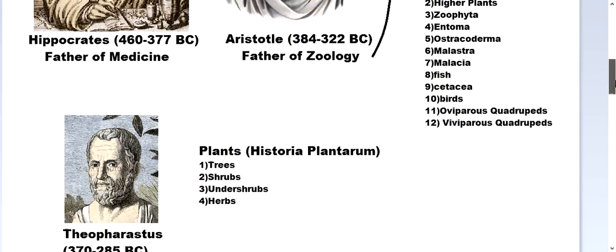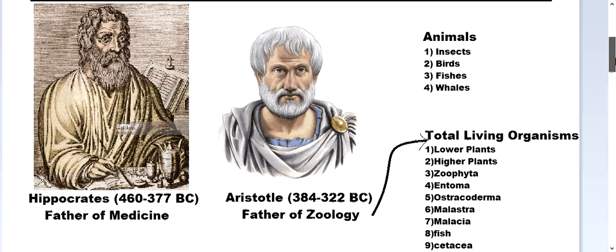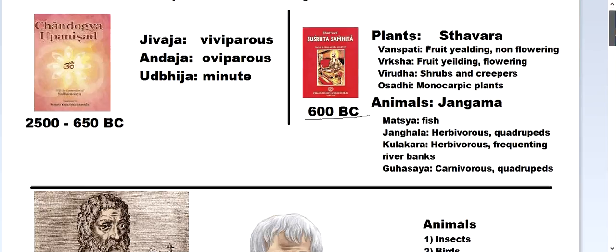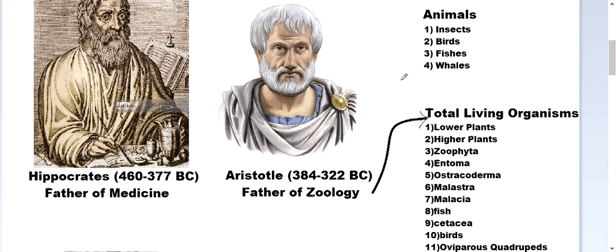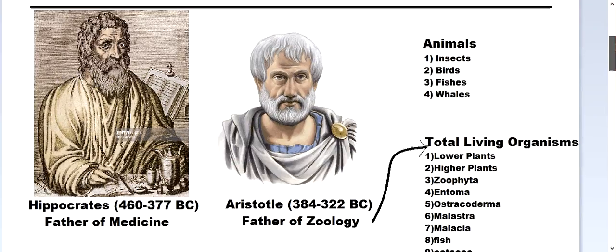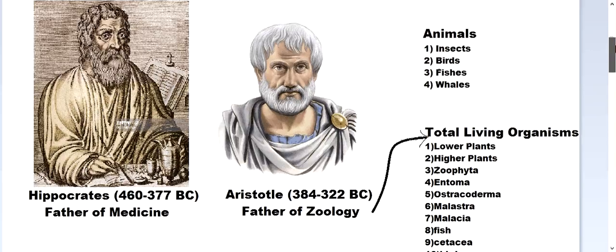If you noticed, until now people had already touched upon a two-kingdom classification — dividing living organisms into at least plants and animals. As early as 600 BC, the Susruta Samhita classified organisms into plants and animals, and the Greek scholars again classified into animals and plants. People broadly understood that there are at least two groups around them: plants and animals.